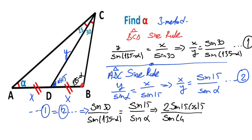We can write sine(45 minus alpha) instead of sine(135 minus alpha), giving us sine(45 minus alpha) equals sine 15 over sine alpha.